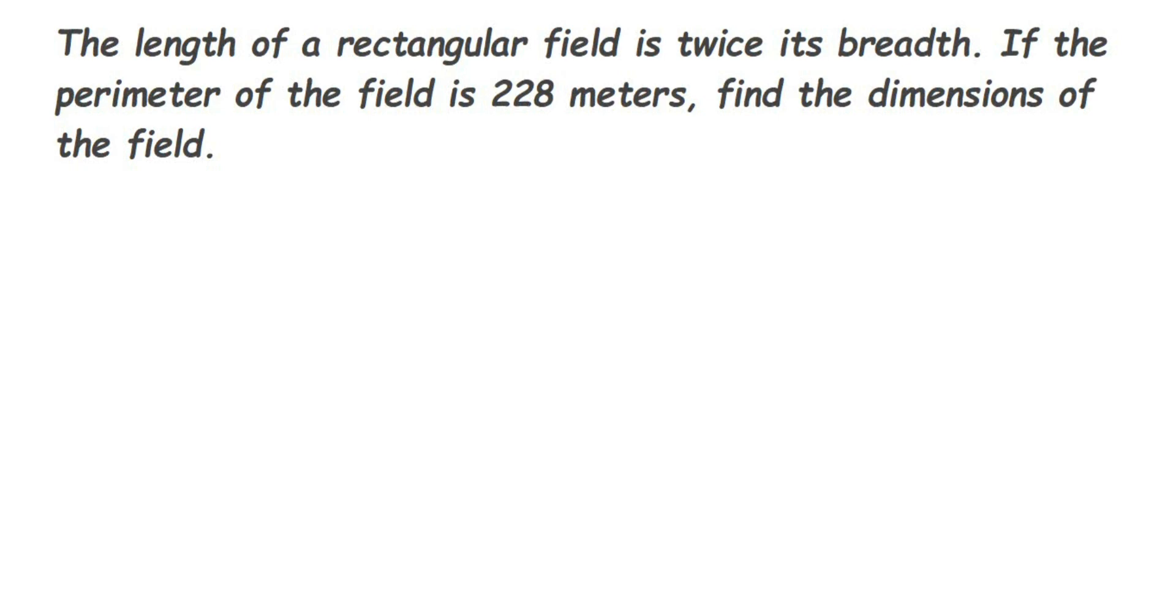Hey everyone, here's a question: the length of a rectangular field is twice its breadth. If the perimeter of the field is 228 meters, find the dimensions of the field. They have given a relationship between length and breadth. The relation is the length of a rectangular field, so there's a field which is in the shape of a rectangle.